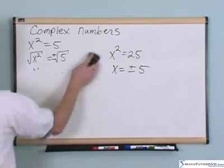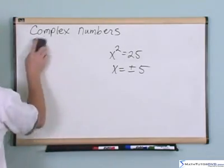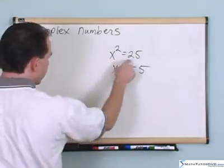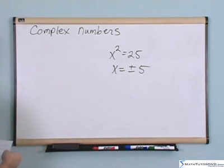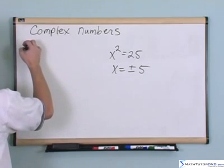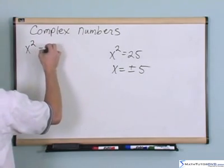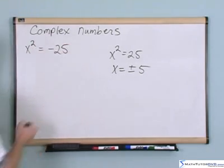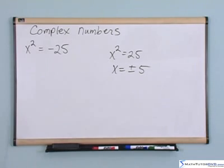So let's say that we're working with the problem kind of like this: x squared is equal to 25. What if you had, oh I don't know, just on the test or something, x squared is equal to negative 25. How would you solve a problem like that?